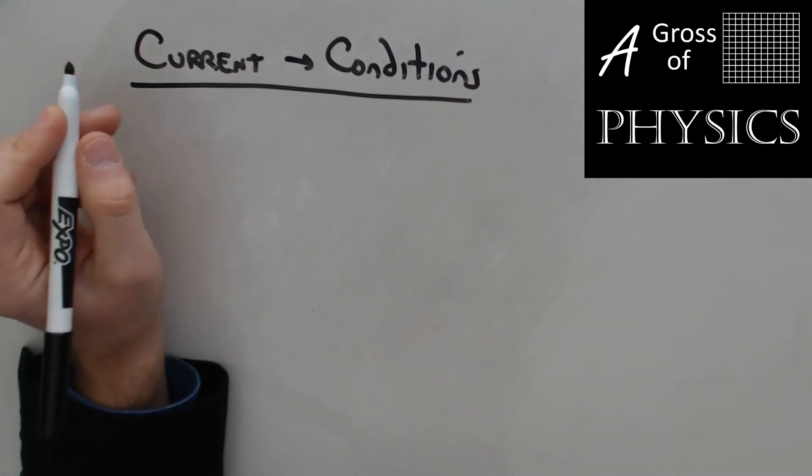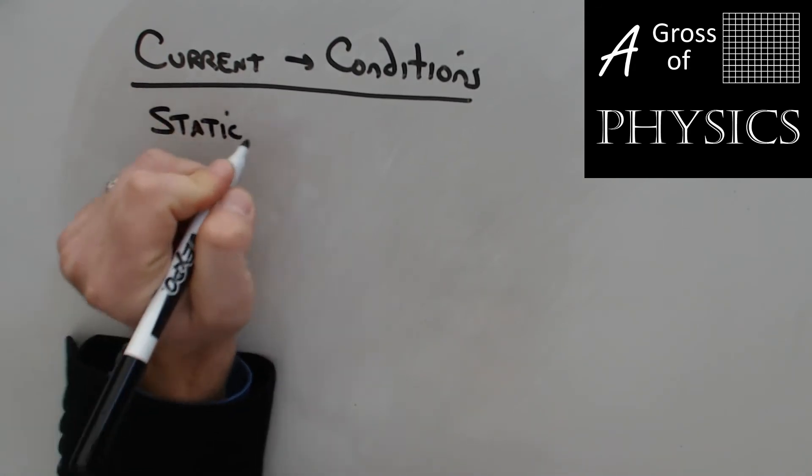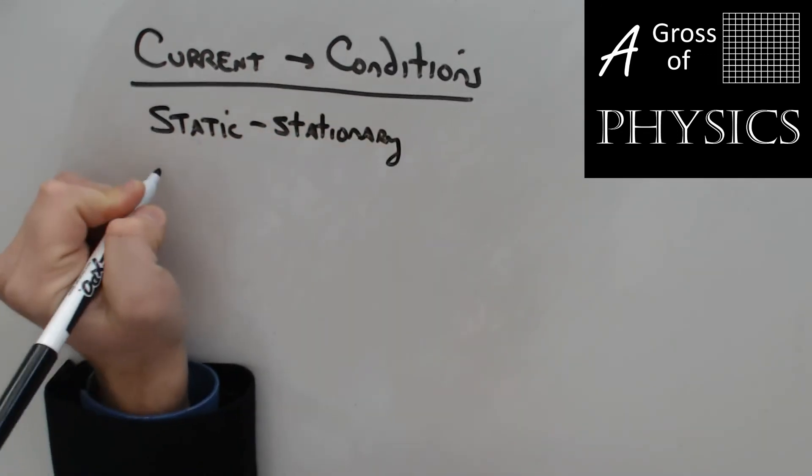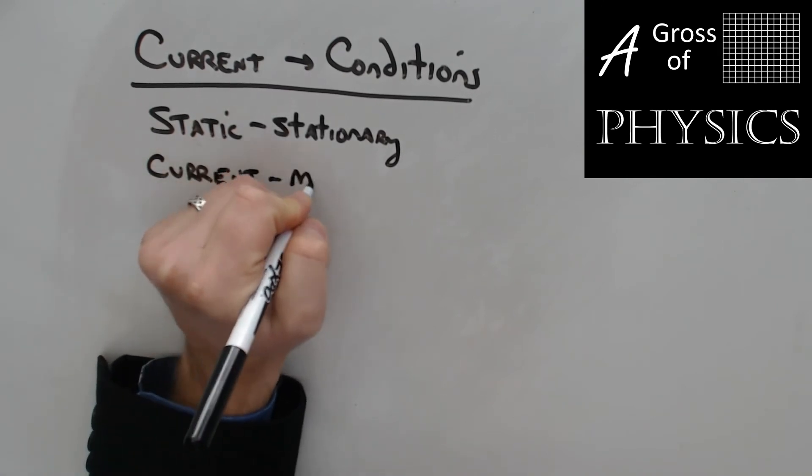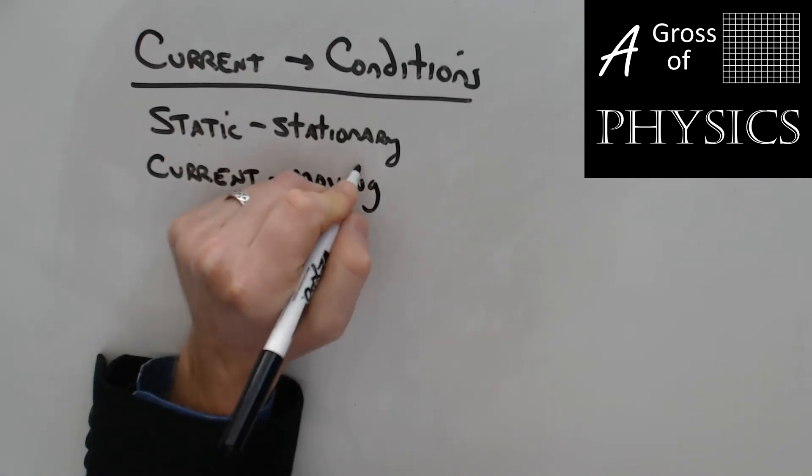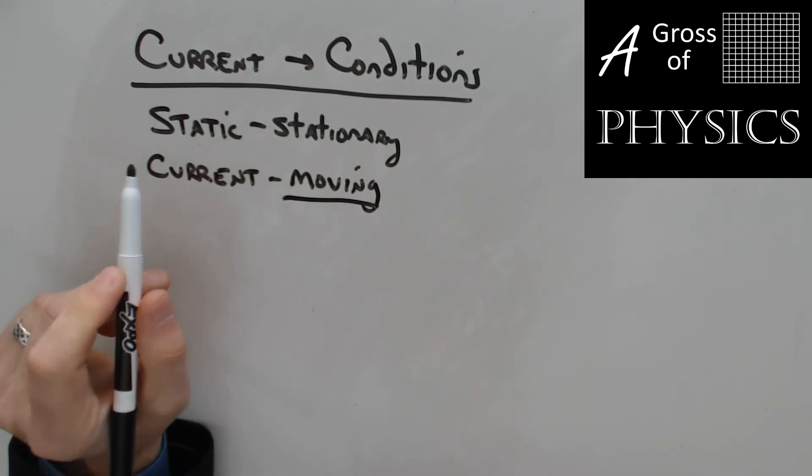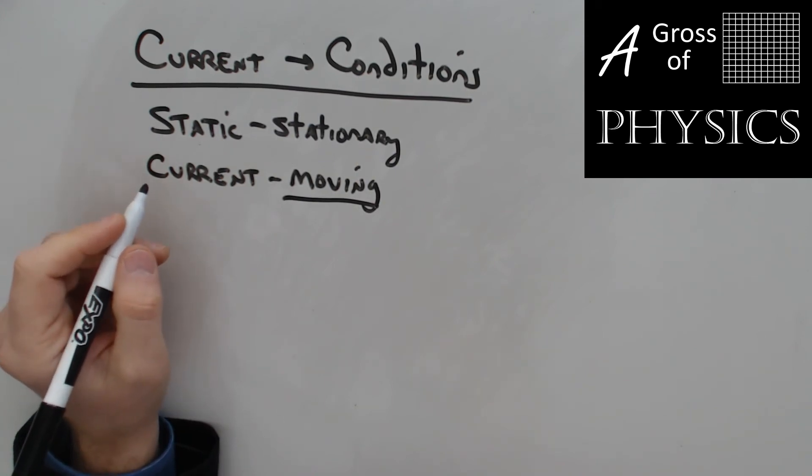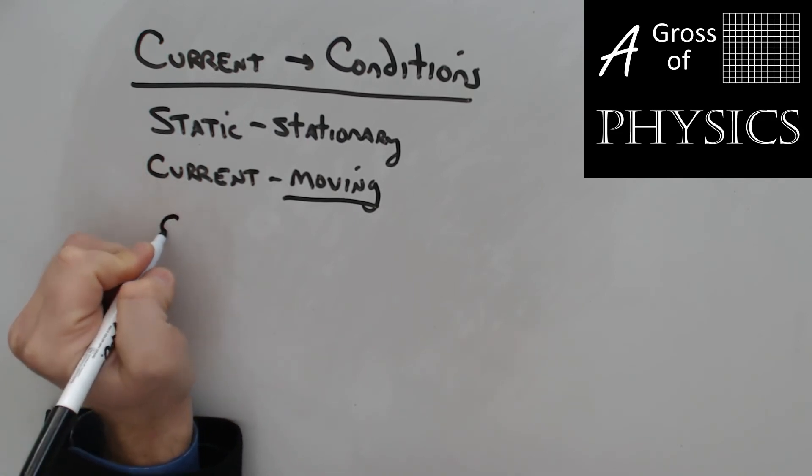Now we just finished our discussion of static electricity last chapter. So static was stationary. As opposed to current, which is moving. And current electricity is the current we think of like in a river or a stream. Now in order for current to exist, three things have to be present. And we need to have a complete path.